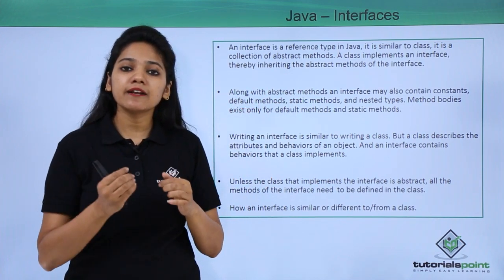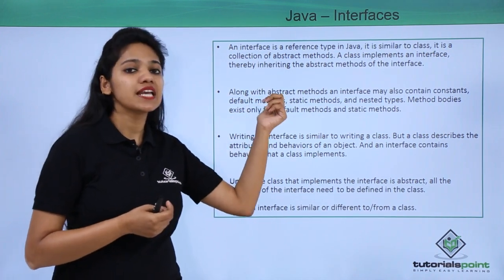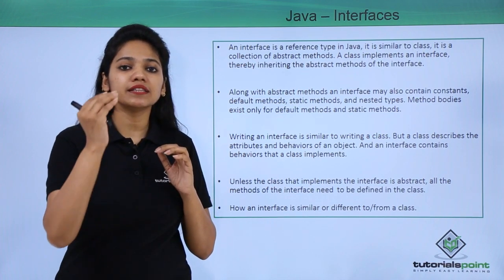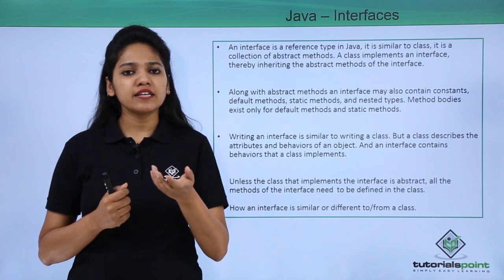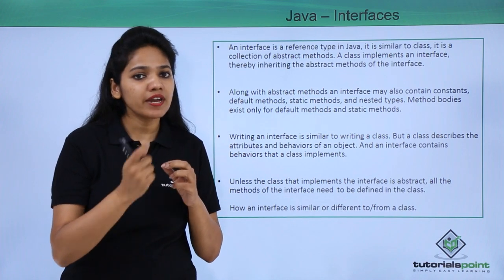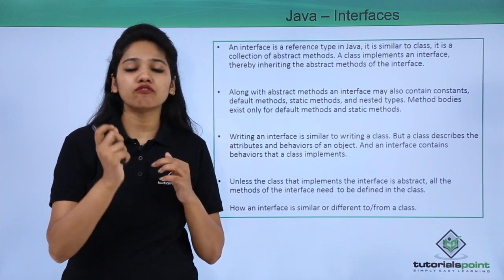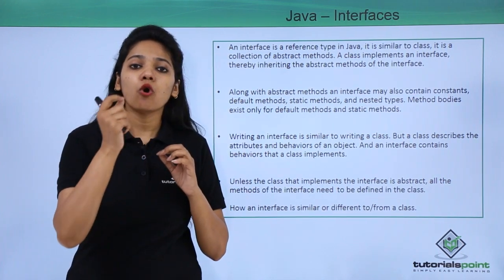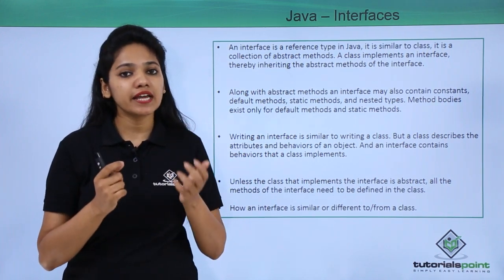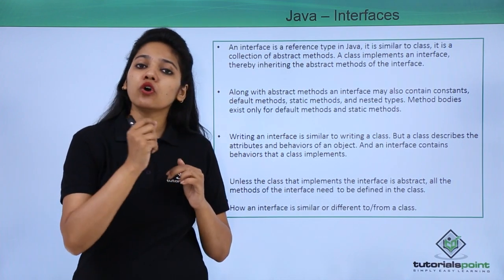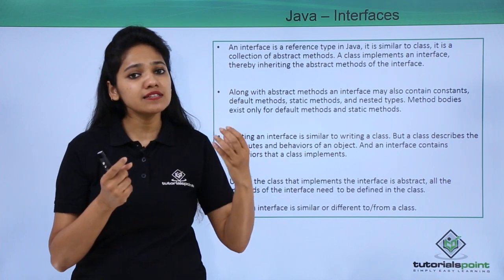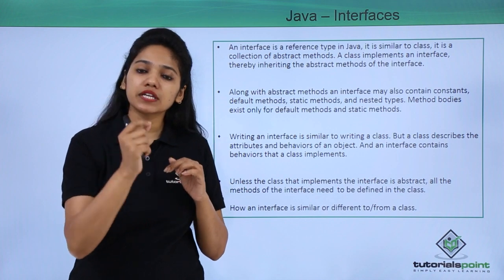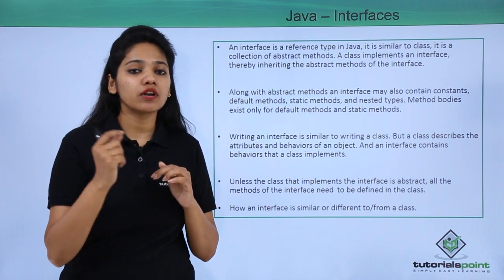An interface looks similar to a class — it includes abstract methods, and also certain static or default methods — but these methods must be defined in the class that implements the interface. The difference between abstraction and interface is that in abstraction, the extending class must define all abstract methods but may not define non-abstract methods. Whereas in an interface, the implementing class must define all methods. Also, you do not use the abstract keyword for interface methods, because they are by default abstract.